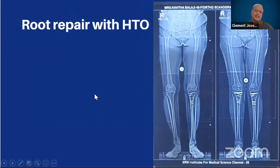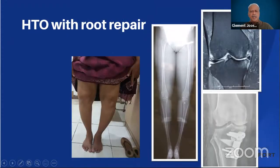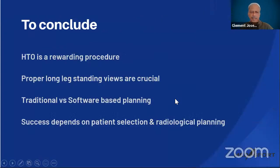HTO is a very rewarding procedure that can be used alongside other joint-preserving options such as meniscal root repairs. Patients who have good results typically request the procedure on the contralateral side within one to two years, making bilateral HTO not uncommon. Cartilage repair combined with HTO is another useful application. To conclude: HTO is very rewarding — obtaining proper long-leg standing views and thorough pre-operative planning using traditional methods or available software is essential. Success depends on patient selection and radiological planning.